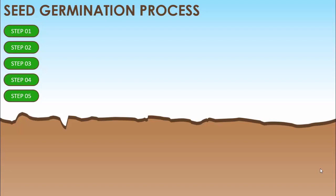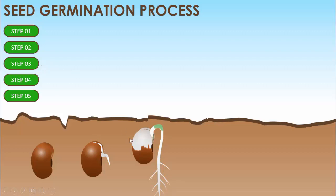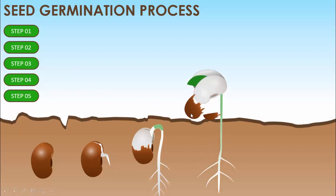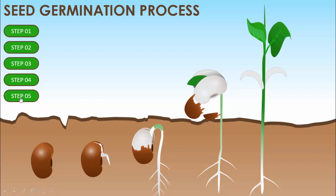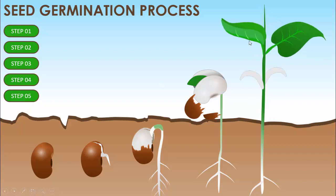Let me show you how this particular slide works. I have made one kind of soil here and we have five different steps. The first step: when I click on it, you can see we are placing the seed in the soil. The second step: the radicle is emerging from the seed. The third step: it's taking the shape of roots. The fourth step: it goes out of the soil and the seed coat comes out and falls on the ground. Then step five: a small baby plant is born — you can see the small leaves.